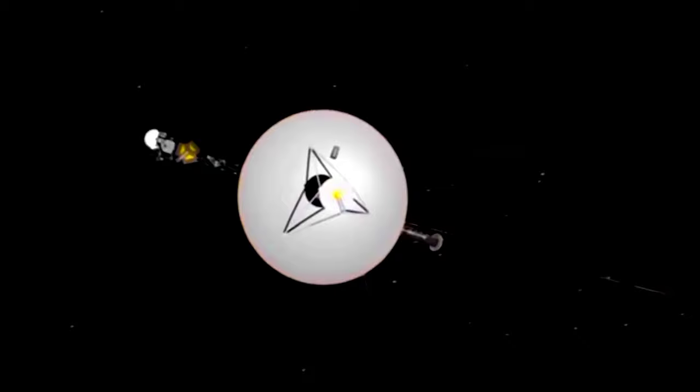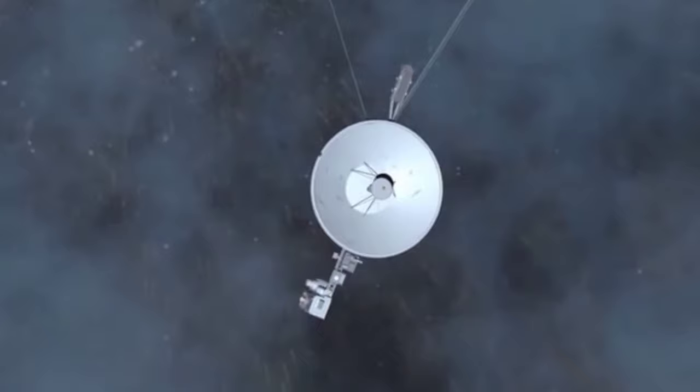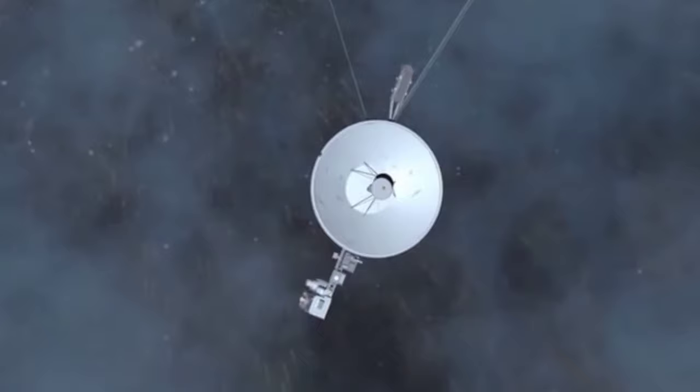Since the Oort cloud is so far away, space probes have yet to reach the area of the Oort cloud. Voyager 1, the fastest and farthest of the interplanetary space probes currently leaving the solar system, will reach the Oort cloud in about 300 years and would take about 30,000 years to pass through it. However, around 2025, the radioisotope thermoelectric generators on Voyager 1 will no longer supply enough power to operate any of its scientific instruments, preventing any further exploration by Voyager 1.